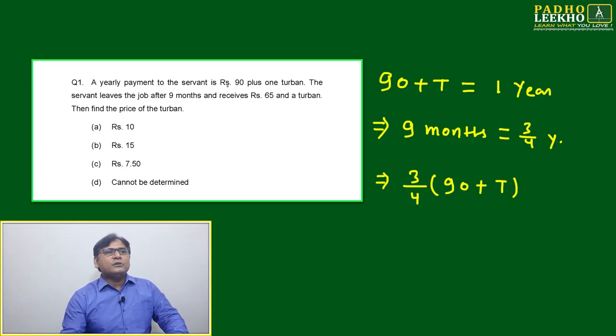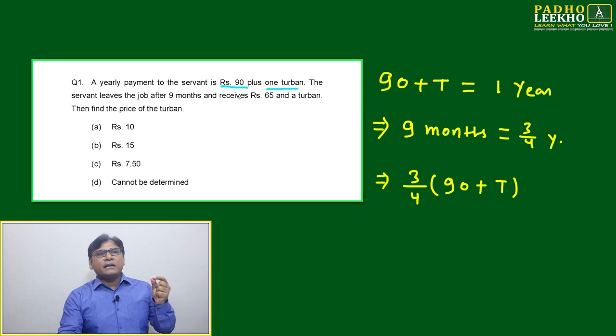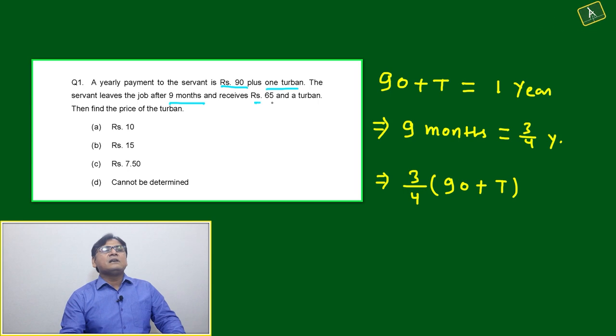This question is: A yearly payment to the servant is Rs. 90 plus one turban. This was the promise or discussion that happened. If one year you will do the job, then you will get Rs. 90 and one turban. The servant leaves the job after nine months only and receives Rs. 65 and turban.